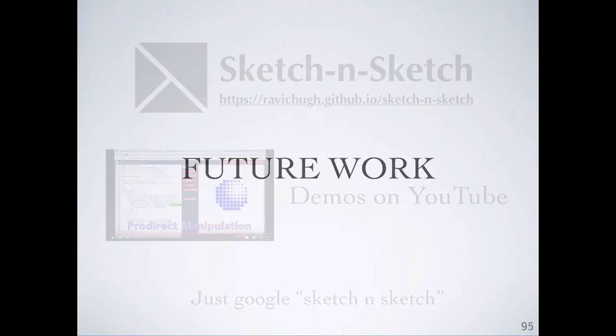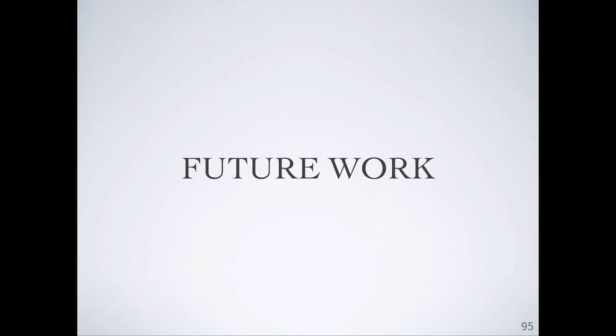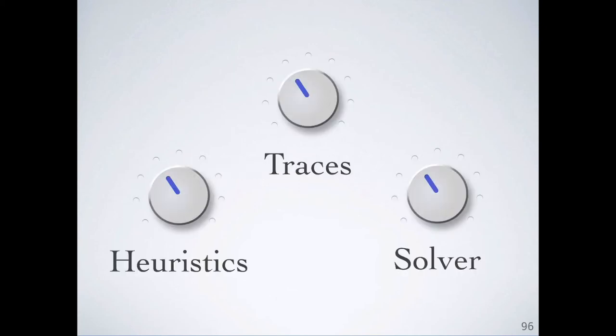Speaking of which, because this work is only a first step in combining programmatic and direct manipulation in this particular way, there are a lot of avenues for further research. I want to mention three. The first involves tweaks to the live synchronization approach presented today. There are several knobs to turn in the current implementation. A lot of choices we made were for simplicity in a first implementation, and there's no reason to believe they are optimal. We might experiment by trying different heuristics, different solvers, and maybe even different trace languages.